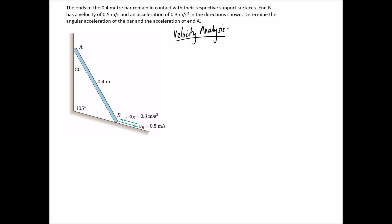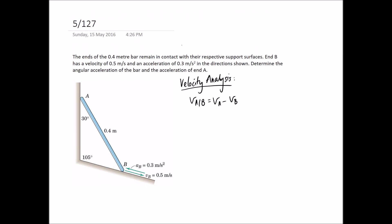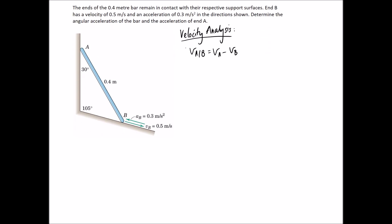For our velocity analysis, we're going to be looking at comparing the velocity of the two endpoints. We know that it's going to be equal to the difference in their absolute velocities, so we'll solve for each of these individually. The velocity of A relative to B is going to be equal to the angular velocity at which these points rotate relative to each other, multiplied by their relative radius.